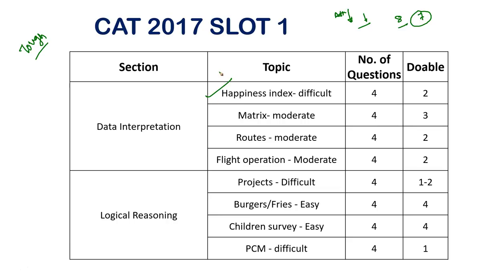In CAT 2017 Slot 1 DI, the happiness index was a tough set but with a little time and looking at options, some questions were manageable. The 5x5 matrix question was problematic and best left. The route question could also be approached through options. For the flight operations set, it was comparatively harder. Overall, in these 16 DI questions, around 6 to 8 were manageable if you gave 20-25 minutes to the DI section.